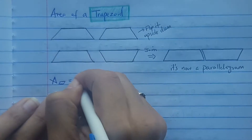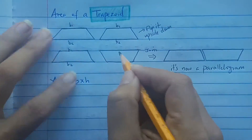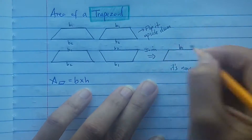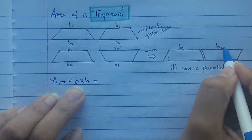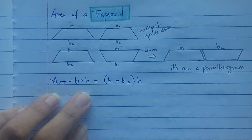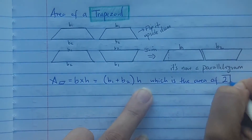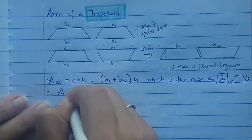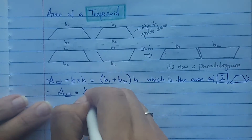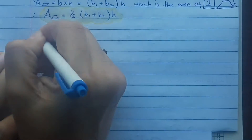The area of a parallelogram is base times height. But let's label the bases: base one and base two are different on a trapezoid. So the base is base one plus base two, times the height. But this represents two trapezoids, so to find the area of one, you divide by two. The area of one trapezoid is one-half of (b1 + b2) times h. And that's how you get the area of a trapezoid.